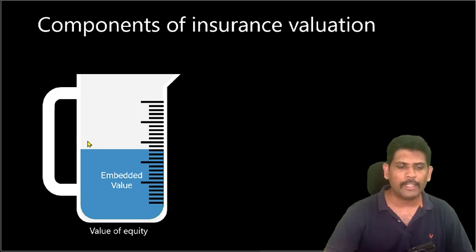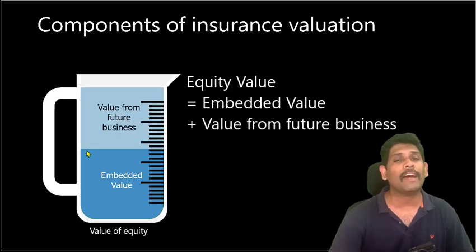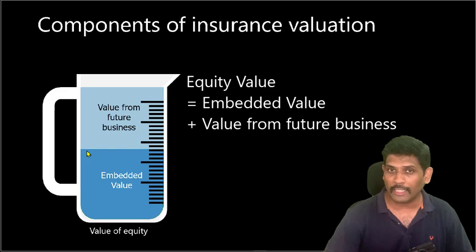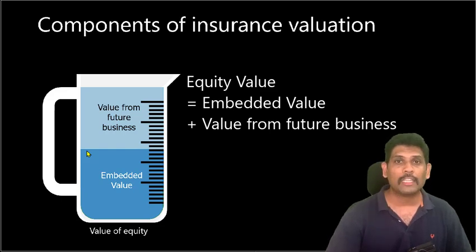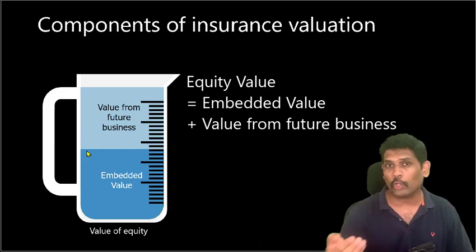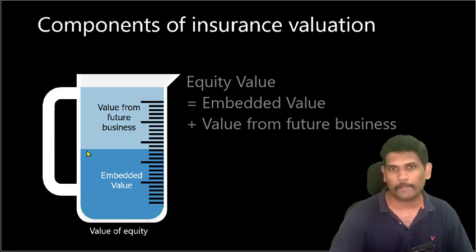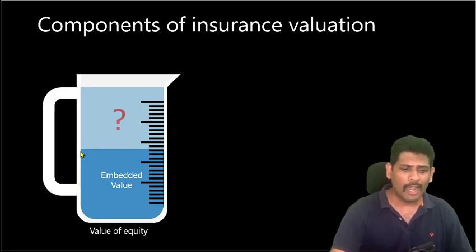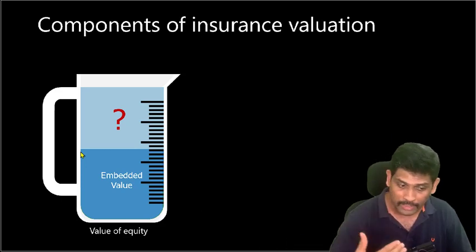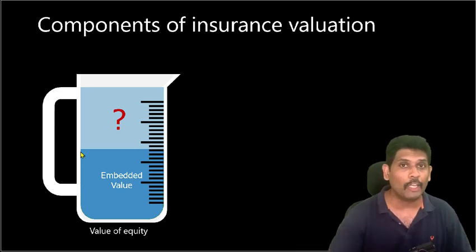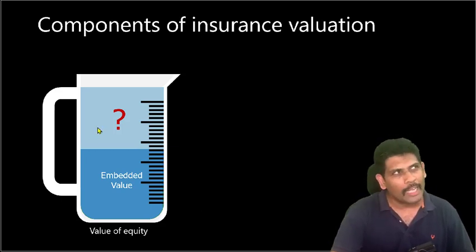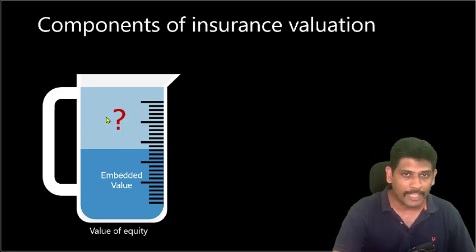The other part of the jar is filled with value from future business — that is, policies that are currently not existing, the policies that we are going to underwrite in future, which will also contribute to our profits and add value to the equity. But how do we measure this number? Even embedded value calculation is difficult and it comes from policies currently in force. The value of future business comes from policies that don't even exist. Calculating this is pretty complicated and almost impossible for an outsider who doesn't have the required data.